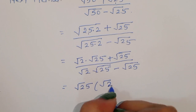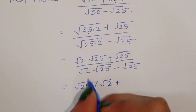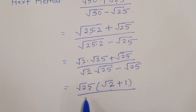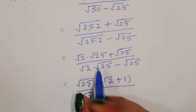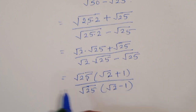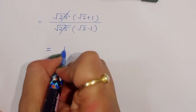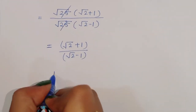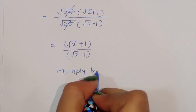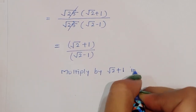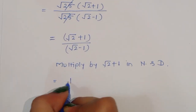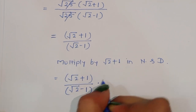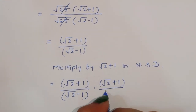We can see that √25 is a common factor everywhere. Taking √25 common in both numerator and denominator: numerator becomes √25(√2 + 1), denominator becomes √25(√2 - 1). The √25 cancels, giving (√2 + 1) divided by (√2 - 1). Now we multiply numerator and denominator by (√2 + 1).